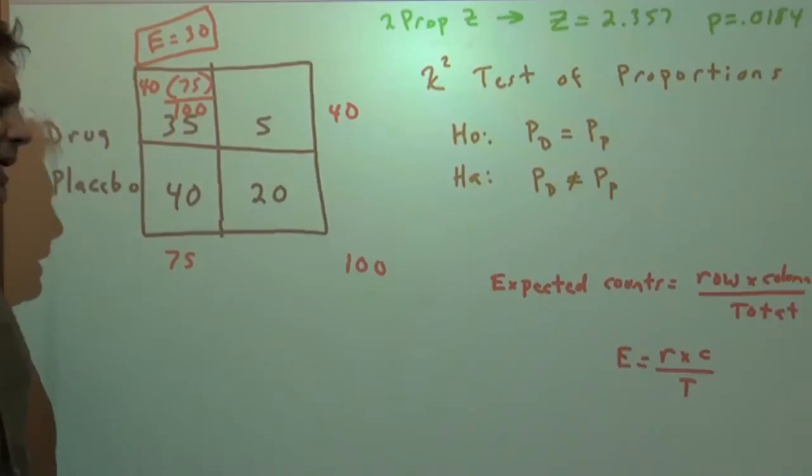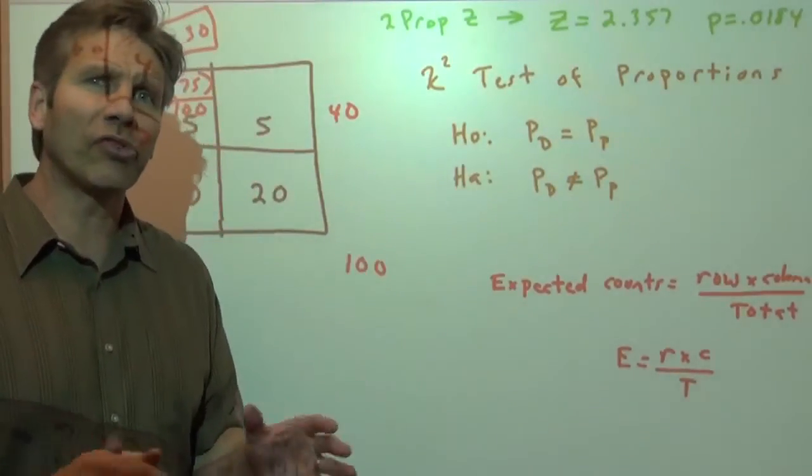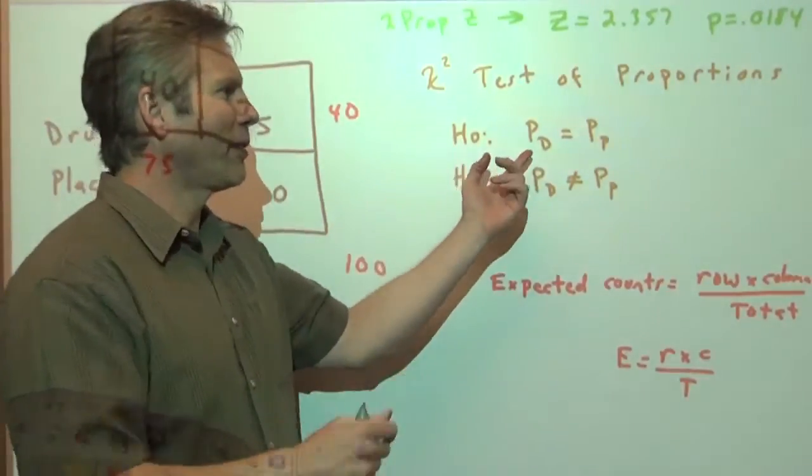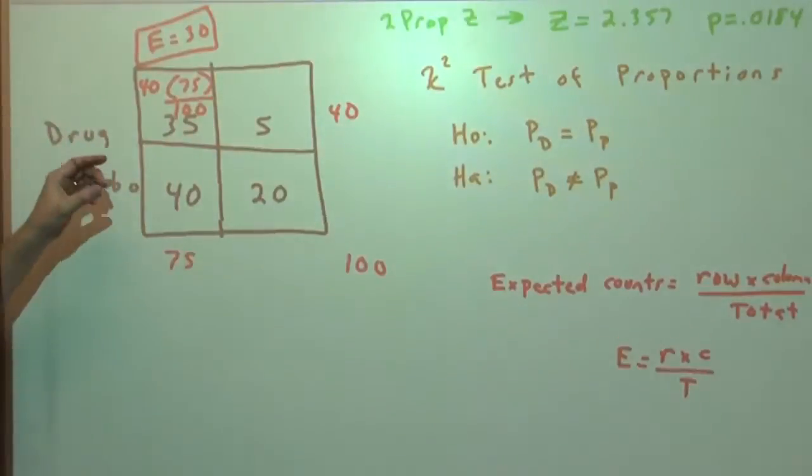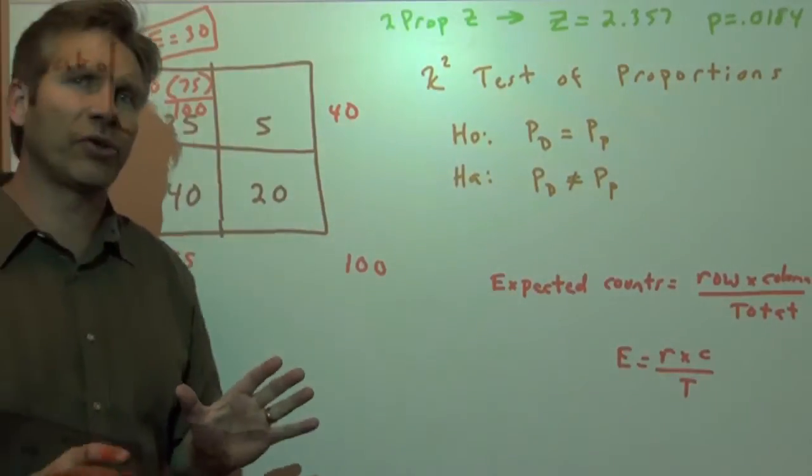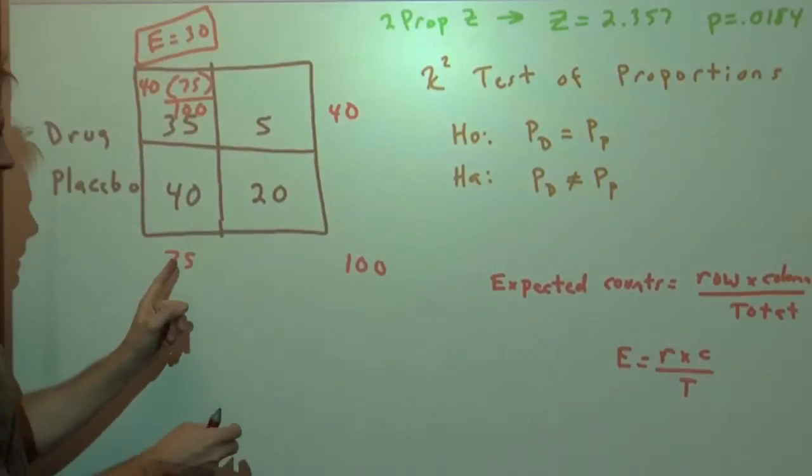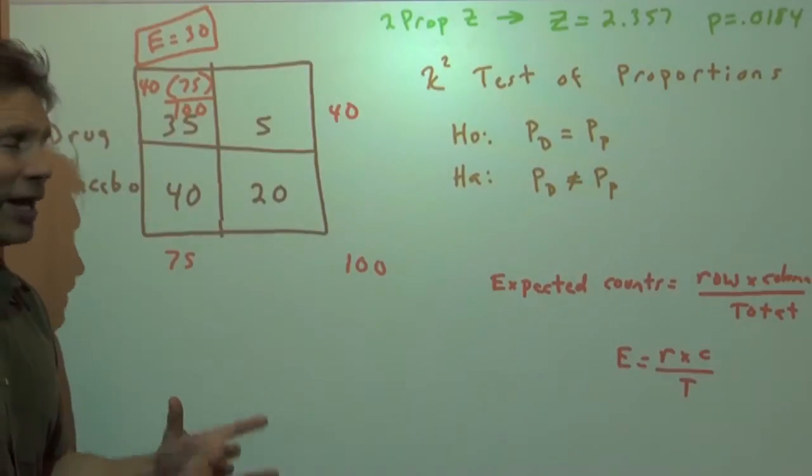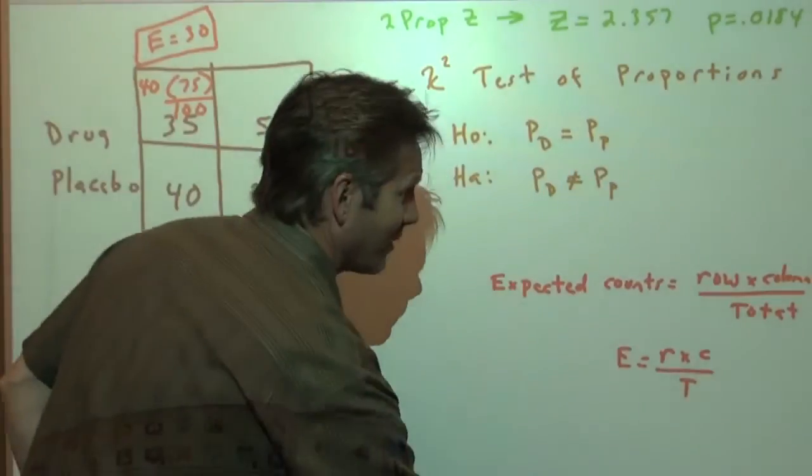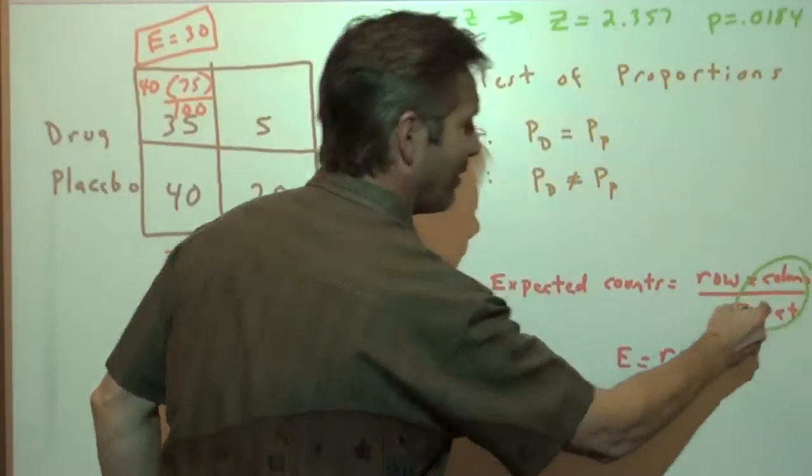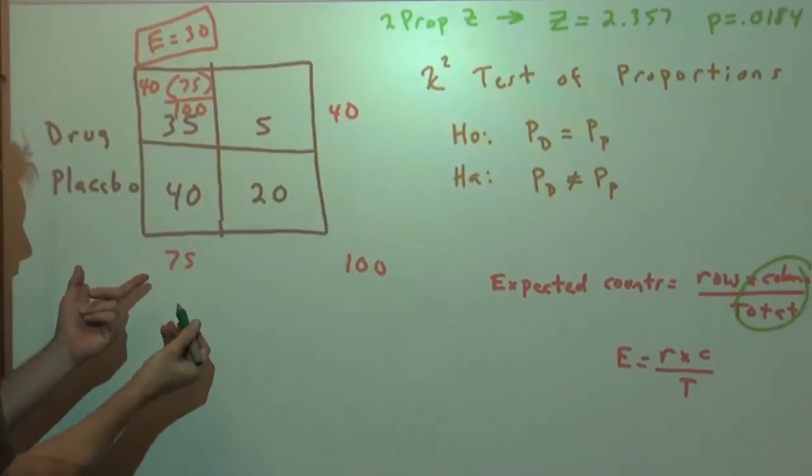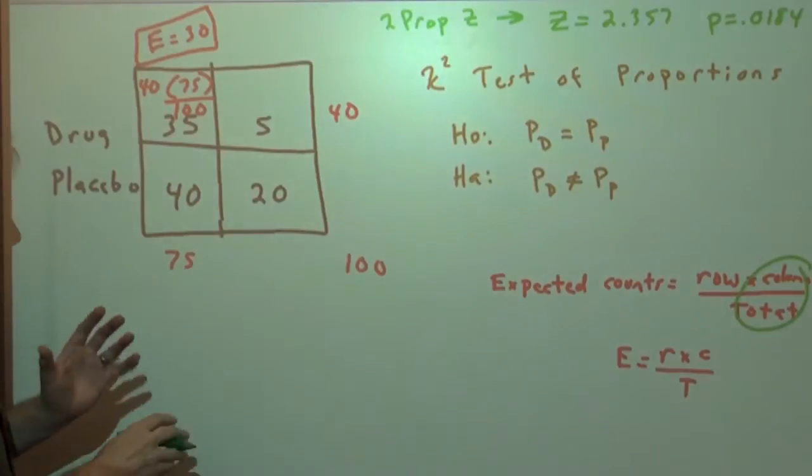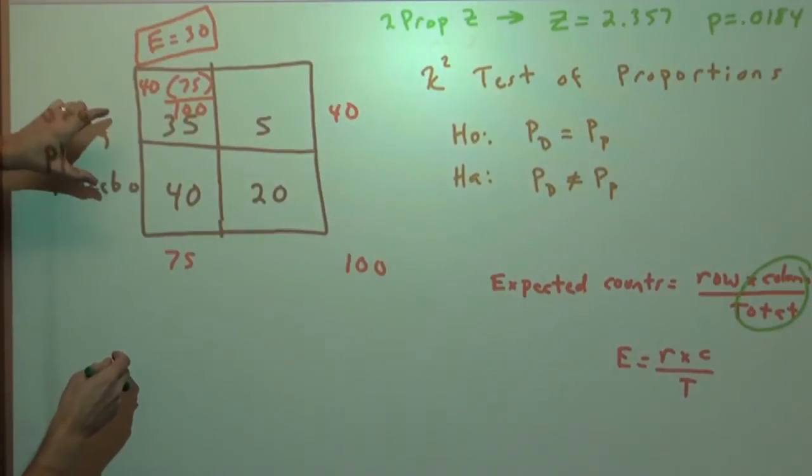So 40 times 75 divided by 100, that would give us an expected count of 30 in this cell. But let's think about what that means. What we're saying is if the null is true, then we're assuming that the proportions are equal. The proportion of people able to stay awake is equal. It doesn't matter whether they're on the drug or the placebo. And furthermore, we would attribute the differences in our results just due to random chance. But overall, we'd be expecting that 75 out of 100 of all the patients, regardless of the drug, would be able to stay awake.